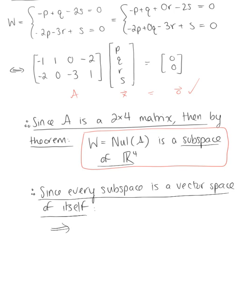We can finally conclude that W is a vector space. And this is our beautiful final answer.